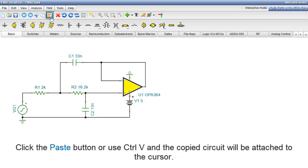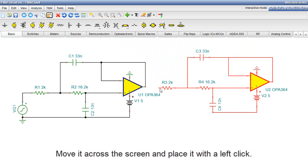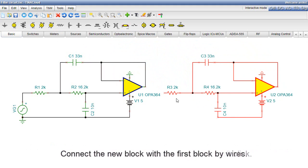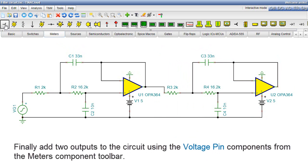Click the Paste button, or use Control-V, and the copied circuit will be attached to the cursor. Move it across the screen and place it with a left click. Connect the new block with the first block by wires. Finally, add two outputs to the circuit using the Voltage PIN components from the Meters Component Toolbar.